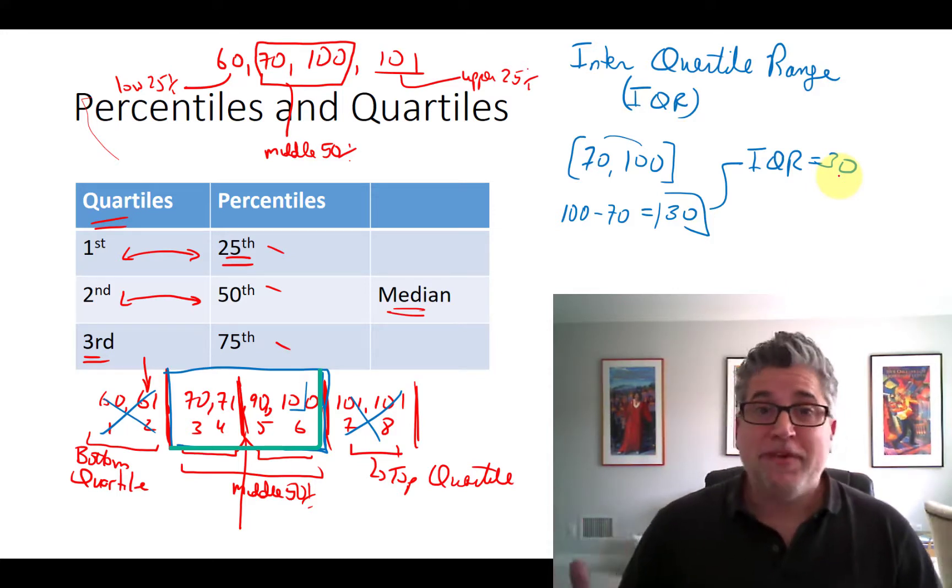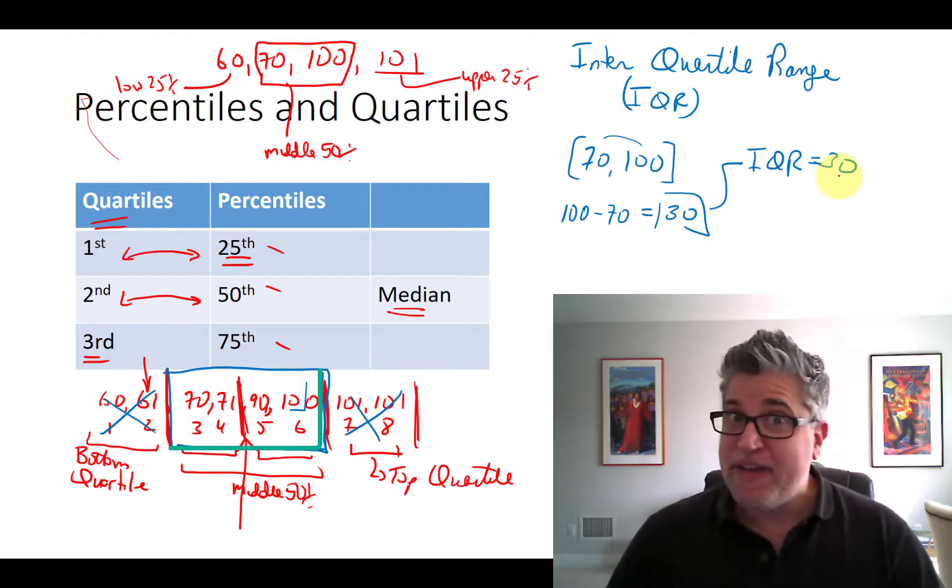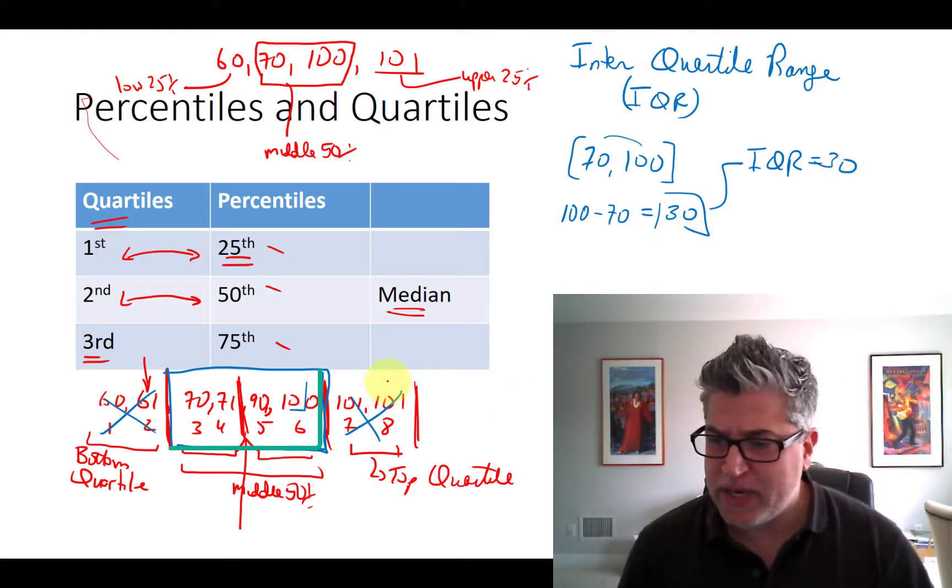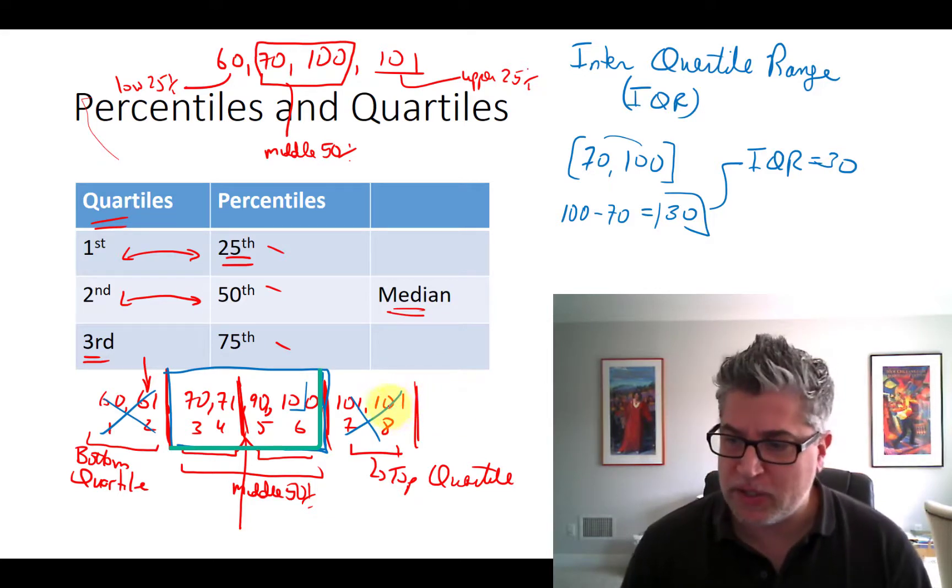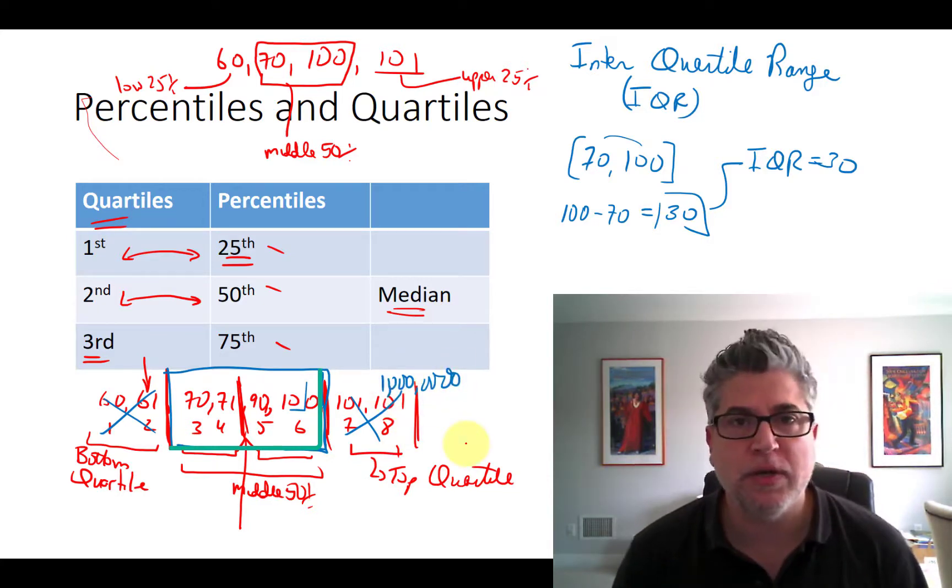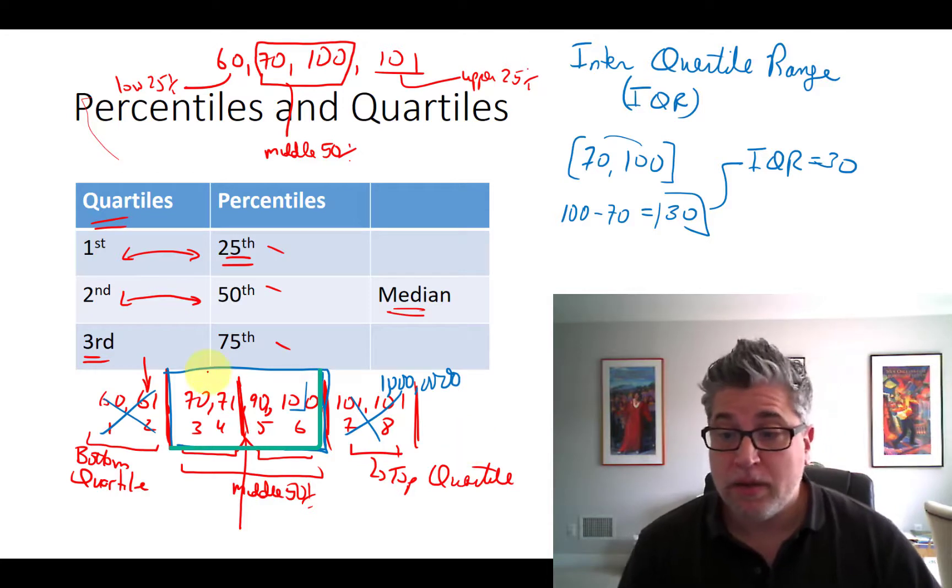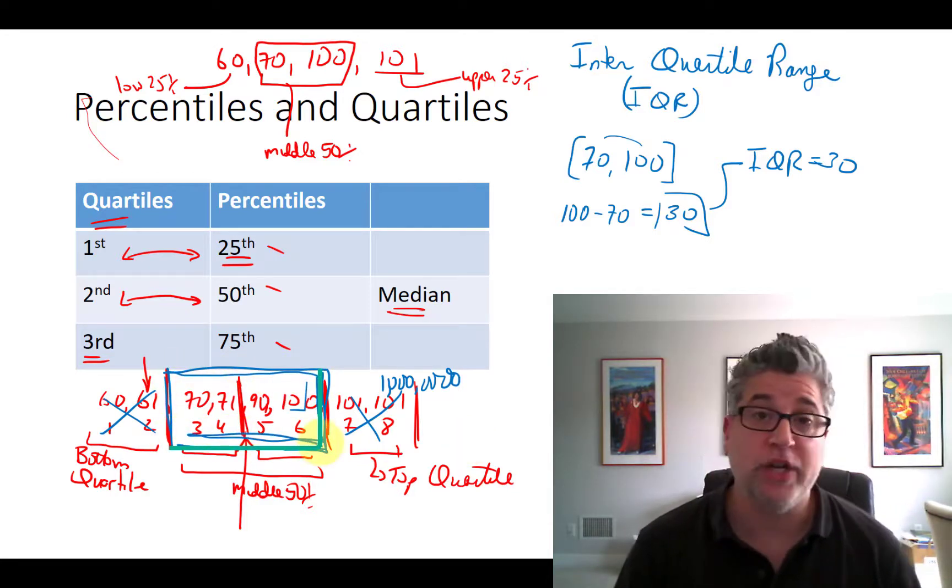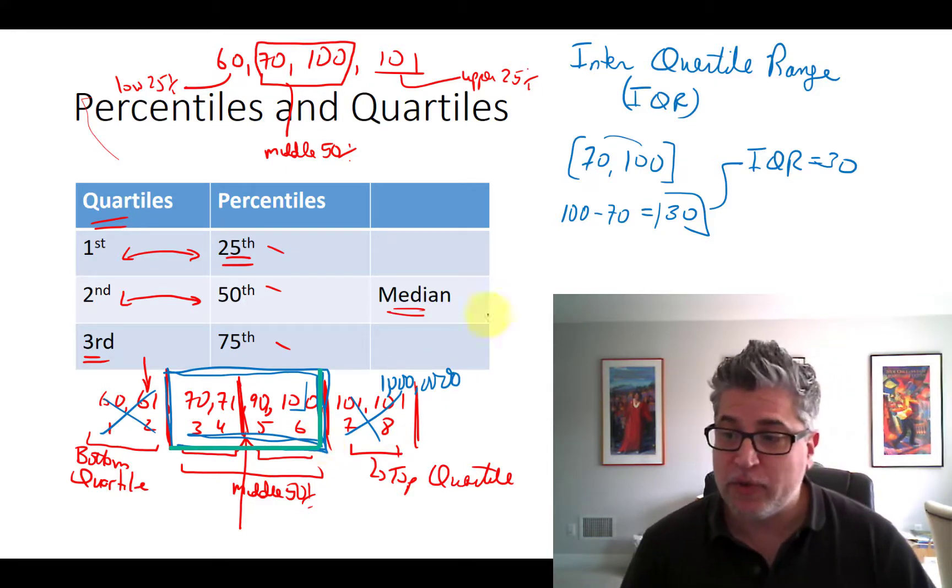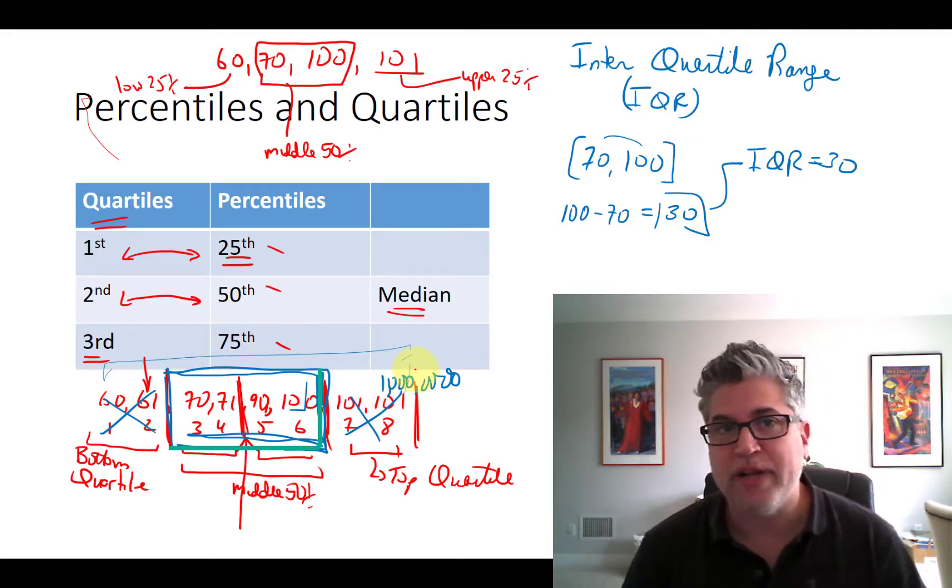What does that mean in English? What that means is the middle 50%, they vary by 30 points. We could have outliers, we could have huge numbers. This, rather than being 101, this could be a billion, 10 billion. I lost track of my zeros. It doesn't matter because the middle 50% haven't changed. Those vary by just 30.